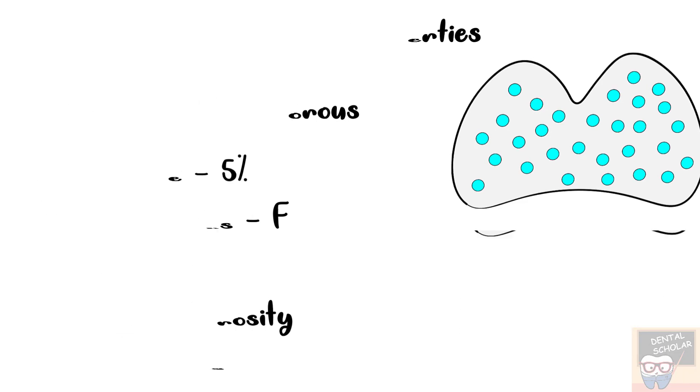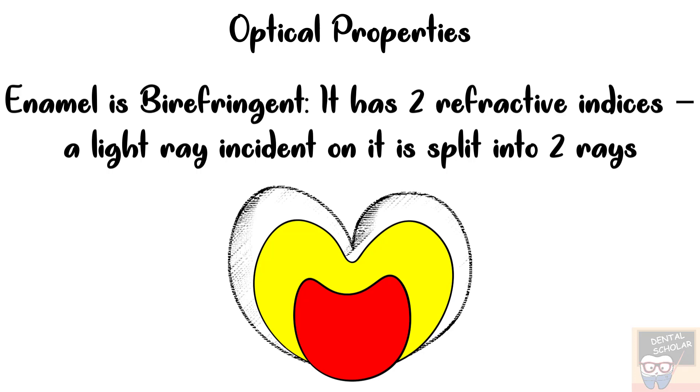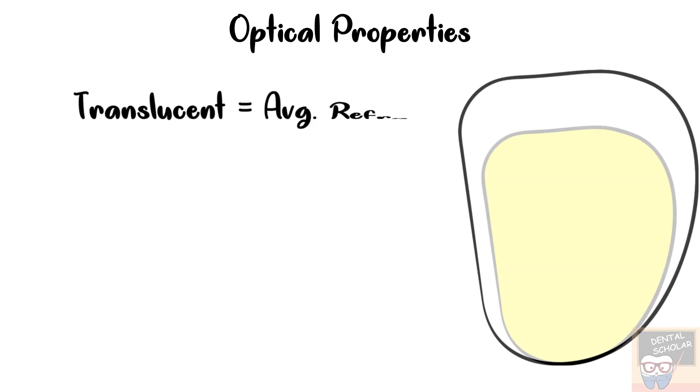Let us now go to the optical properties. Enamel is a birefringent material. It means that it has two refractive indices. So when a light ray is incident on enamel, it is split into two rays. And because of this, its color may vary from cuspal or incisal edge to the cervical margin. Enamel is a translucent material with an average refractive index of about 1.62.